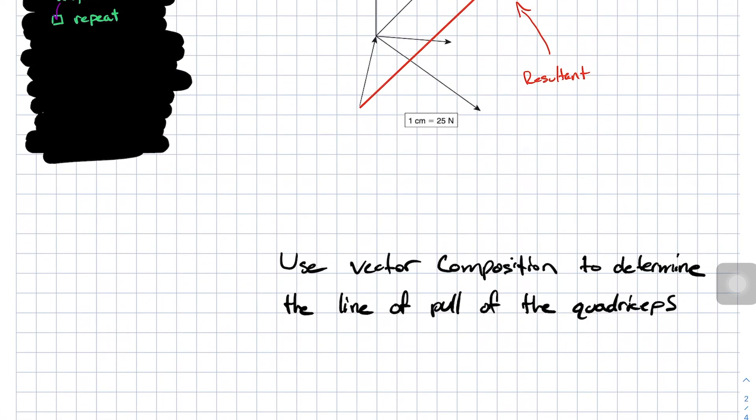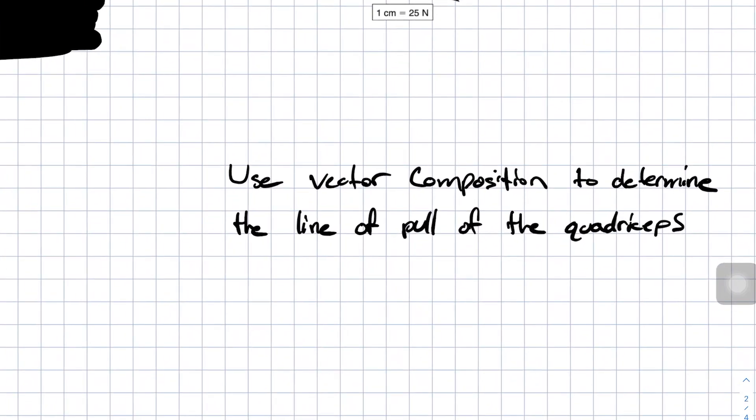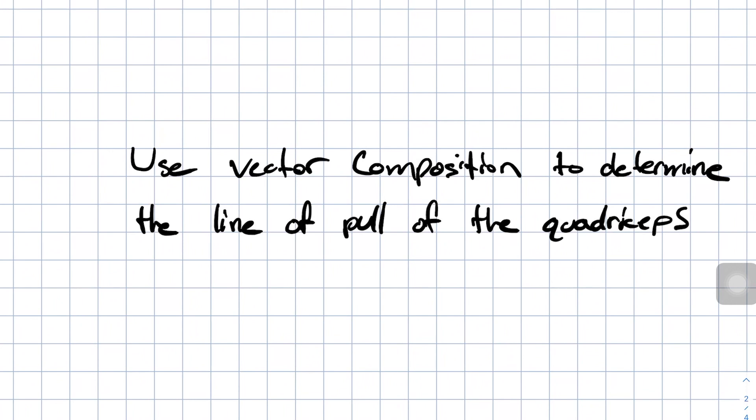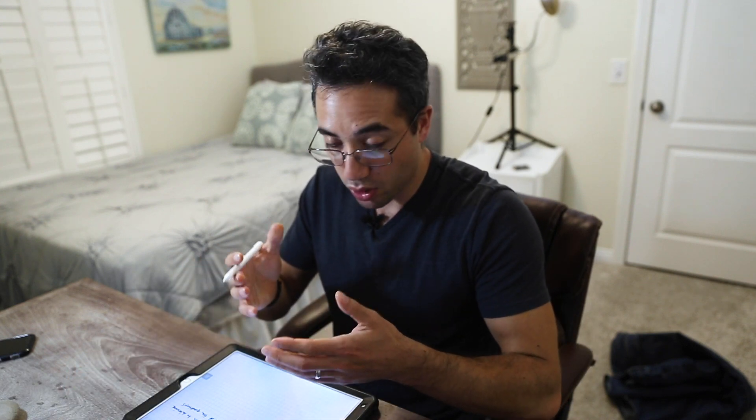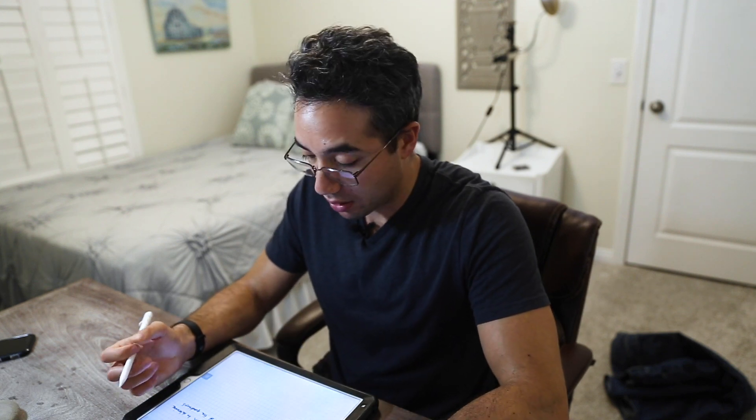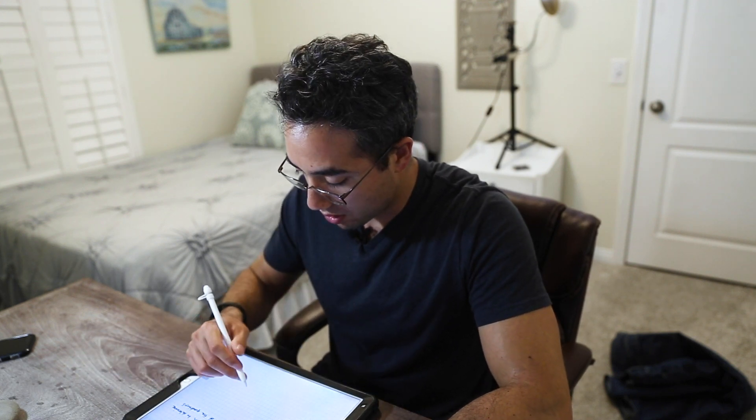Now, if we want to apply that to biomechanics, let's answer this question. Use vector composition to determine the line of pull of the quadriceps. So we know that the quadriceps have varying lines of pull that all meet up at the patellar tendon and result in a single resultant vector that then extends the knee. But how do we know the angle of that line of pull and the magnitude of it? Well, we can use vector composition to find out.